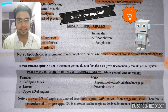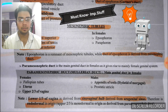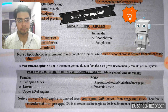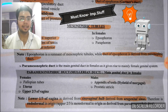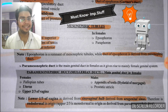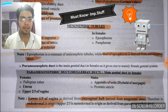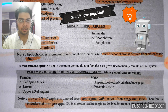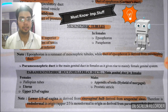In males, most of the paramesonephric (Müllerian) duct is degenerated. However, it forms the appendix of testis — also known as hydatid of Morgagni — and the prostatic utricle. A separate MCQ they can ask: the prostatic utricle develops from the Müllerian duct or paramesonephric duct. Note: we have two mesonephric entities (duct and tubules), while the paramesonephric duct is a single entity.